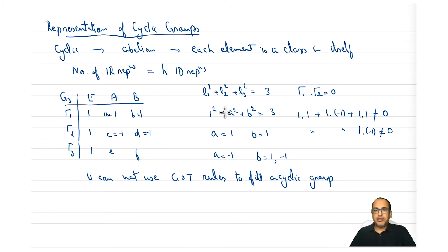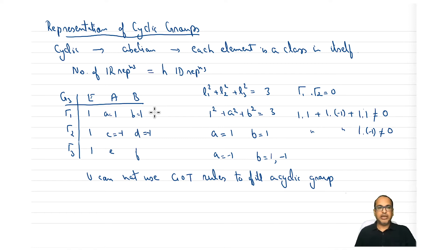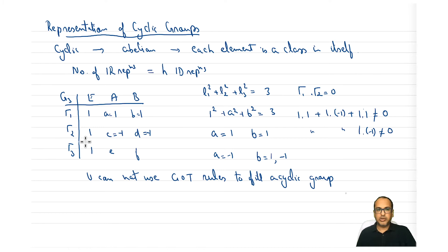There are other solutions: complex numbers can also be solutions, and those complex numbers may fill the table. But finding complex numbers is not straightforward. Let us find a general complex number that will fill up the whole table. Since real numbers cannot be roots, we look for complex solutions.